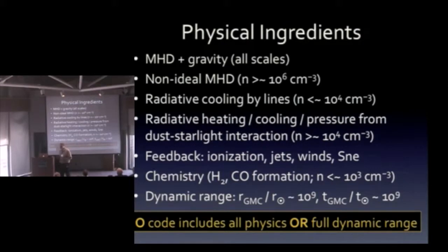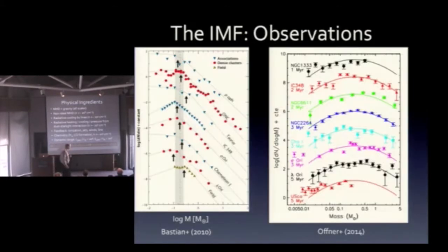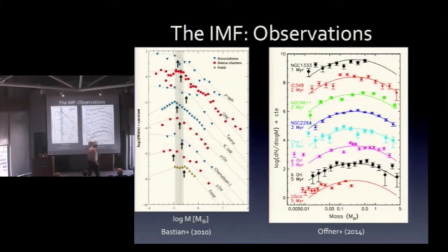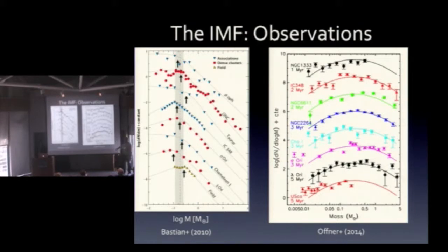So every simulation I show you, I'll be very careful to mention what's been included and what's been left out, because no one's doing it all. Let's start with what we're trying to explain — the IMF. Here are two observational determinations of the stellar IMF from two recent reviews, and what I want you to notice is that things are remarkably uniform.